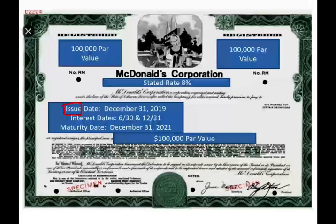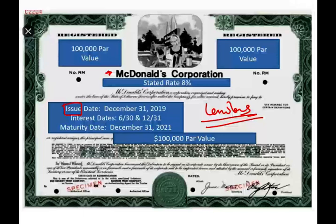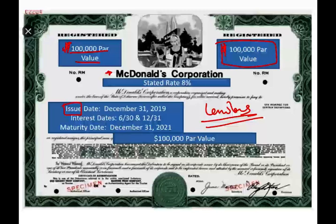They issued it to lenders. McDonald's corporation — this is the issuer — issued the bond to lenders. Lenders are people who are willing to lend money. Here McDonald's is issuing a $100,000 bond to raise money. So this is the amount that they're trying to raise — $100,000. The par value, the dollar amount, is listed on the bond. Notice it's $100,000. This bond represents 100 bonds, because each bond is $1,000, and $1,000 times 100 is $100,000.